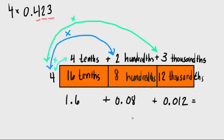And then all you do is add them together. And if we know how to add decimals, it becomes very simple. And our answer is 1.692, which is the number that we got before, 1.692.